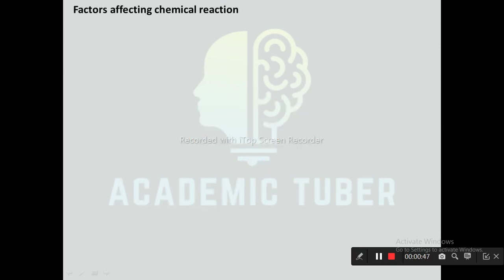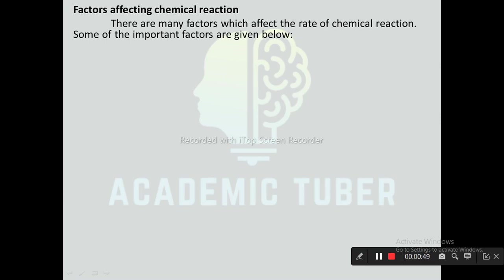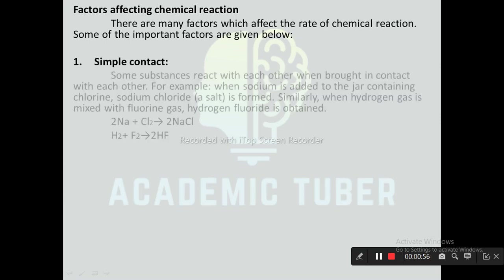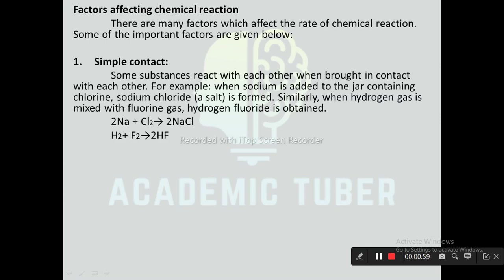Factors affecting chemical reaction: There are many factors which affect the rate of chemical reaction. The first one is simple contact. When substances react with each other when brought in contact. For example, when sodium is added to the jar containing chlorine, sodium chloride is formed. Similarly, when hydrogen gas is mixed with fluorine gas, hydrogen fluoride is obtained: 2Na + Cl₂ → 2NaCl; H₂ + F₂ → 2HF.